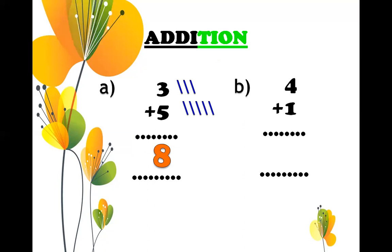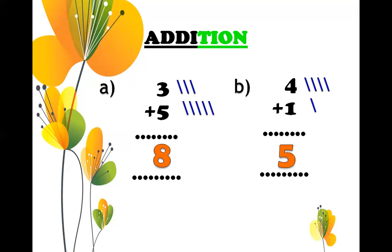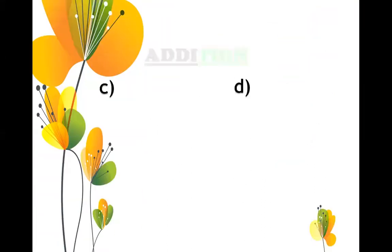Now next: 4 plus 1. Draw four lines in front of number 4: one, two, three, four. Then draw one line in front of number 1. Now count how many lines are there: one, two, three, four, five. You have to write five. This is the correct answer. This is the way you're going to do the addition — you can also count on your fingers.